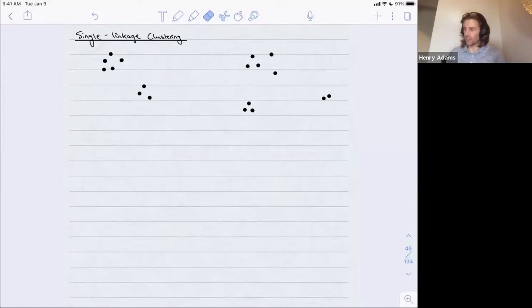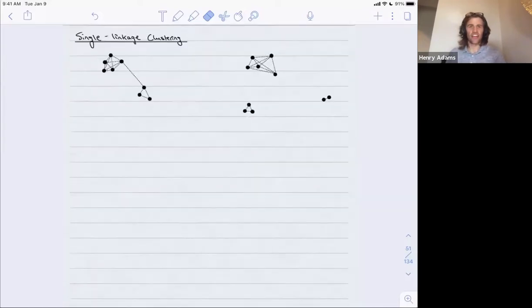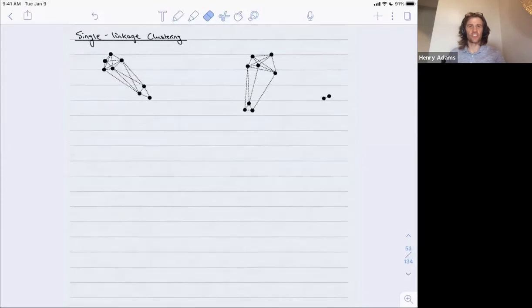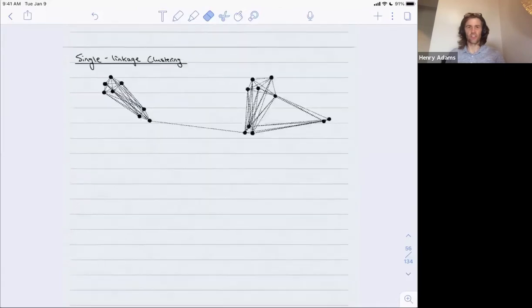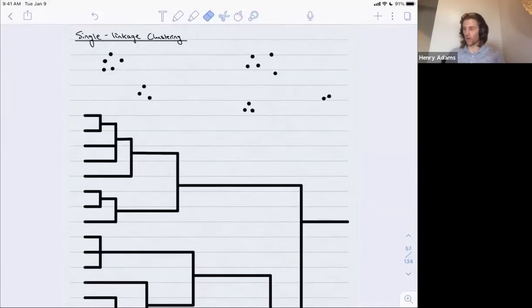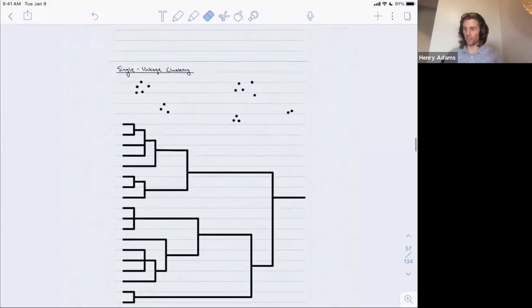In single-linkage clustering, you add in the short edges and then add in longer and longer edges, and you track the number of clusters as you go. And you can encode all this in what's called a dendrogram, as we saw in the last video.